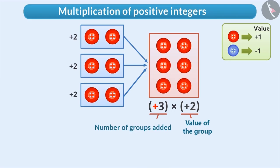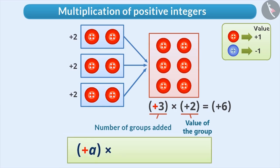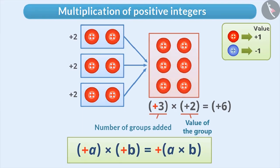Since there are six red buttons in total, we can say that the result of positive 3 into positive 2 is positive 6. Similarly, for any two positive integers, the result of a multiplication is always positive.